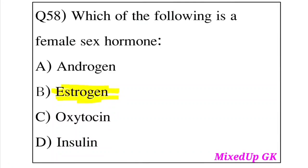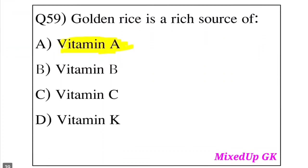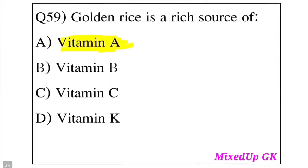Question 59: Golden rice is a resource of which vitamin? Option A: Vitamin A. Option B: Vitamin B. Option C: Vitamin C. Option D: Vitamin K. The answer is Option A, Vitamin A. Golden rice is a source of Vitamin A.